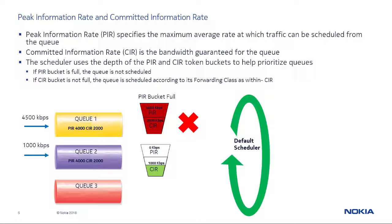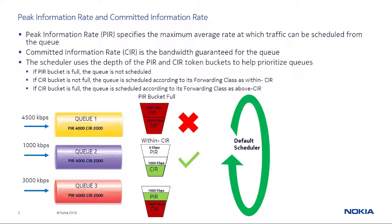For Q2, classified traffic is received at 1000 kilobits per second, with a PIR of 4000 and a CIR of 2000 kilobits per second. The scheduler will schedule packets from the queue as within CIR. The third scenario shows Q3 receiving traffic at 3000 kilobits per second, with a PIR of 4000 and a CIR of 2000 kilobits per second. The CIR bucket is full but the PIR bucket is not full, so traffic is scheduled as above CIR.